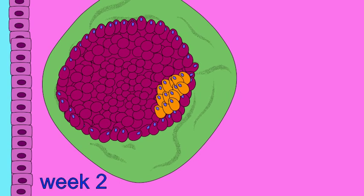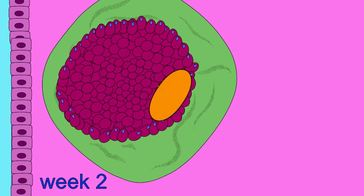During the second week of development, the inner cell mass will flatten to become an embryonic disc composed of several layers.